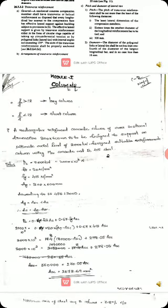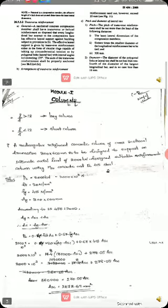Based on slenderness ratio, columns are classified into two types: long column and short column. For short column, L by D ratio is less than 12.